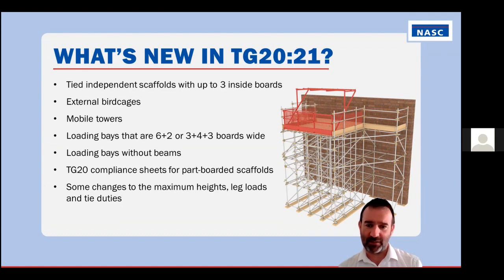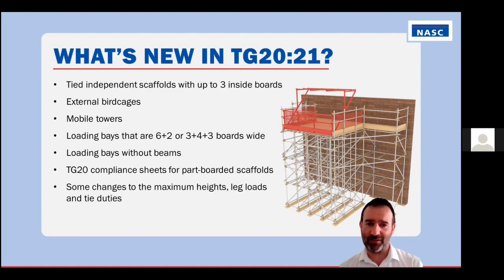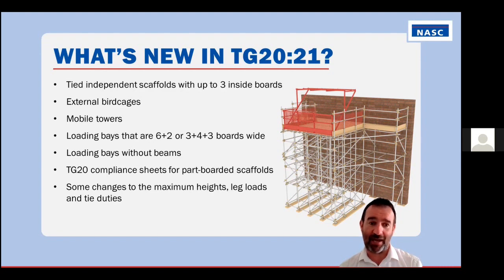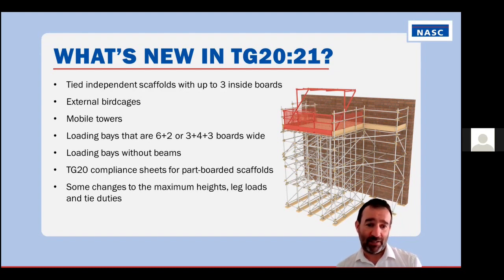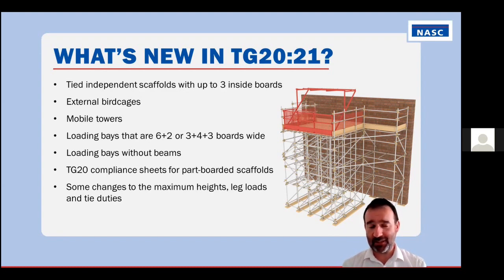We've also substantially changed the loading bays. In TG20:13, loading bays were five boards wide, but feedback indicated that was too narrow for operating the gate. They're now six boards wide with two inside boards between the loading bay and the main scaffold, or they can be up to ten boards wide over three bays. We also now have compliance sheets for loading bays without beams with a reduced base spacing. The TG20 compliant sheets also now provide details for part boarding scaffolds — these were covered in TG20:13 but conservatively, always showing the leg load for a fully boarded scaffold.